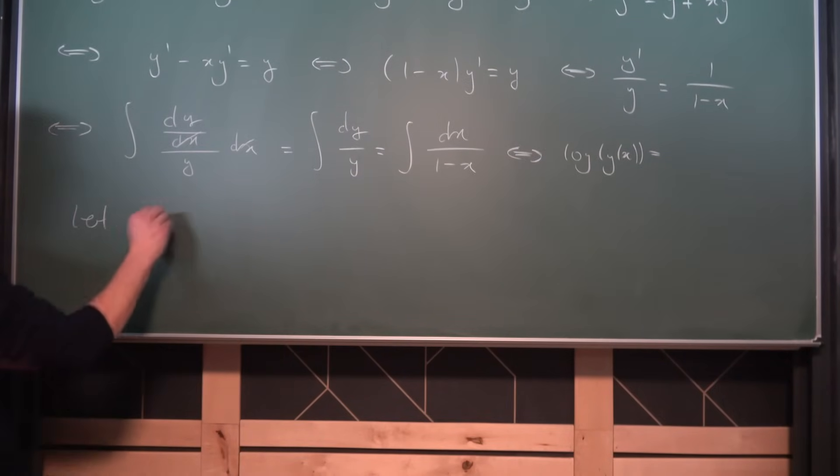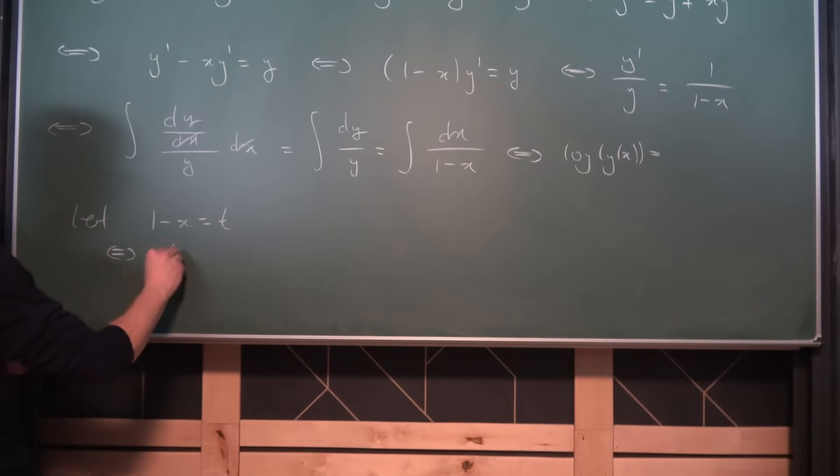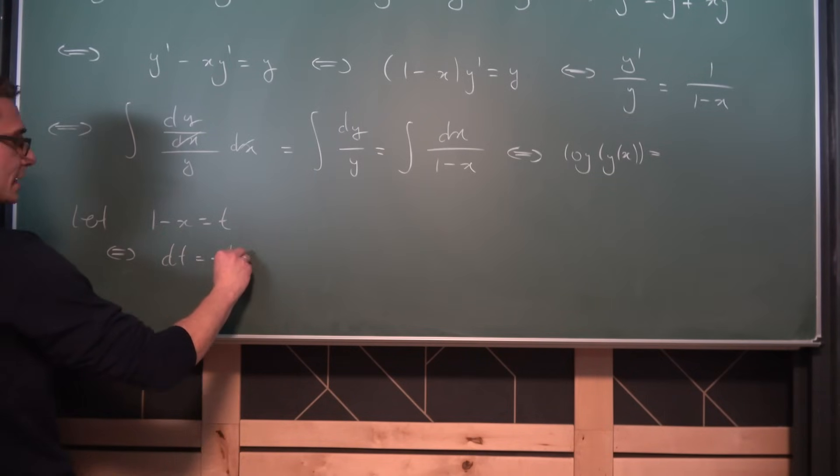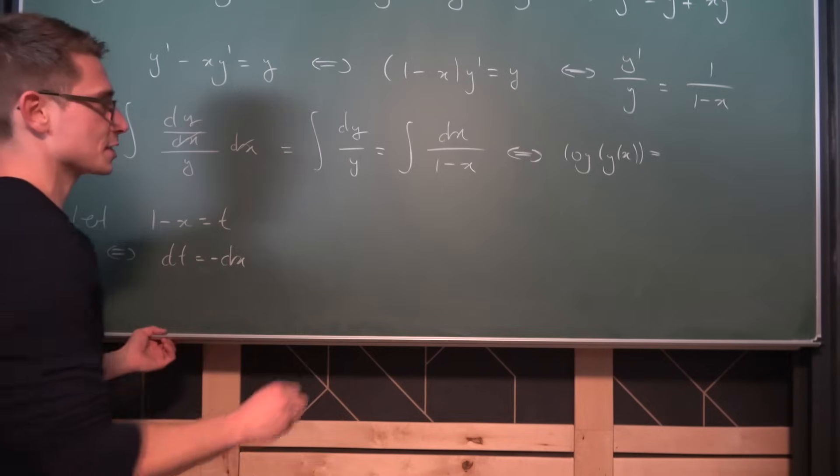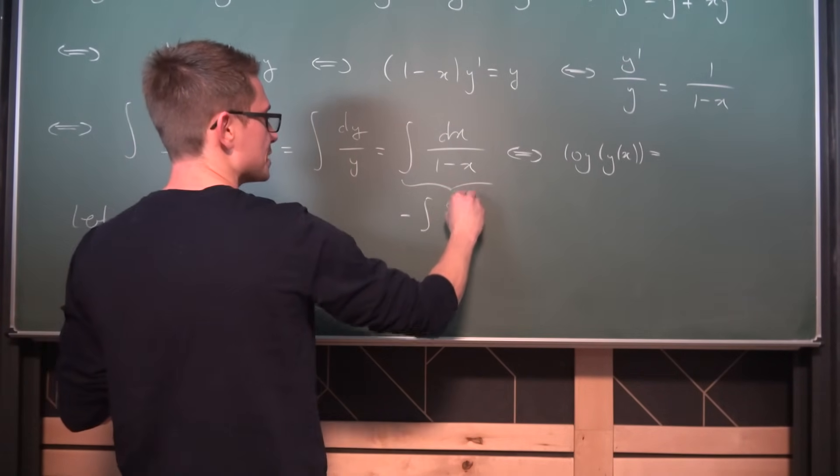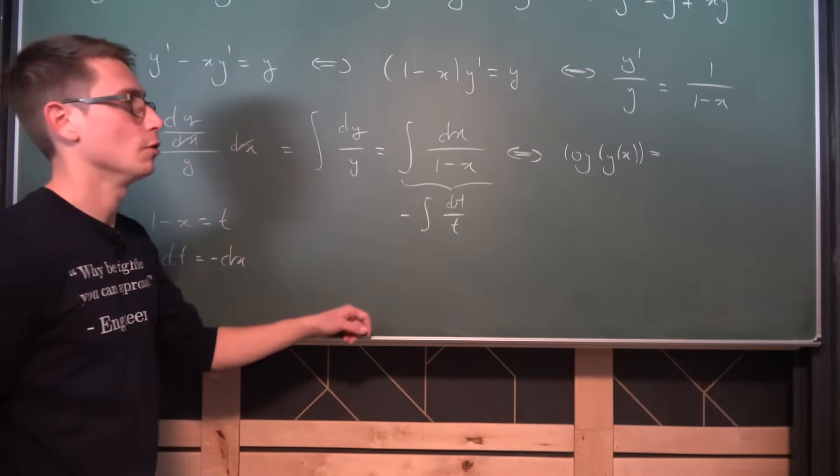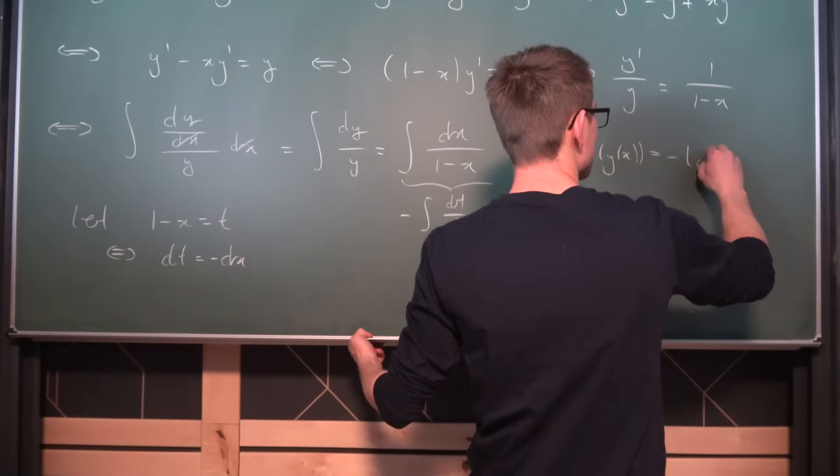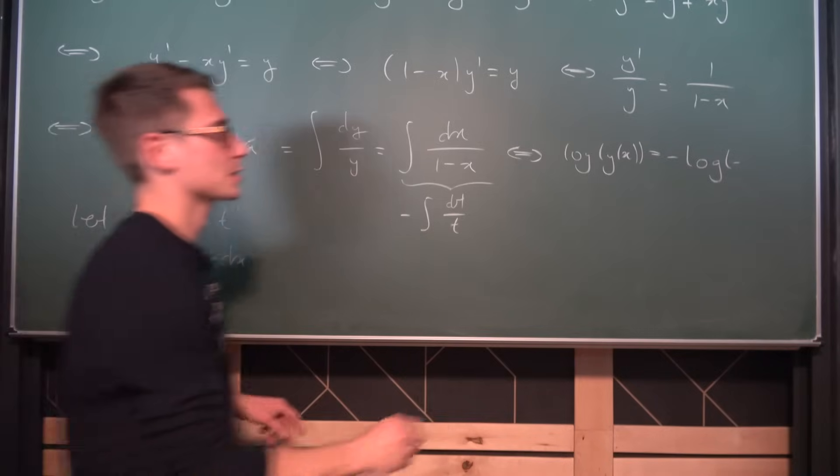So let the denominator 1 minus x be equal to t. Hence, we are going to get that dt is equal to negative dx, or we have dx is equal to negative dt. So this thing right here is nothing other than negative the integral of dt over t, which is just negative the natural log of t. So this right here is negative the natural log of t, and t is nothing other than 1 minus x.